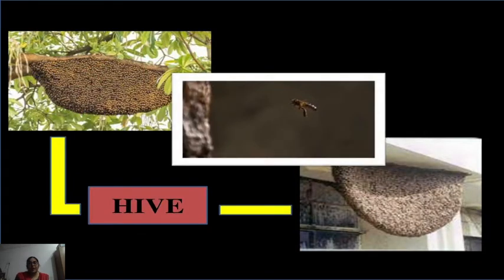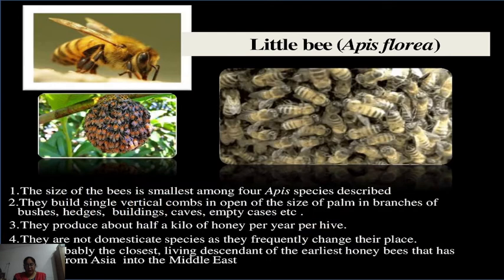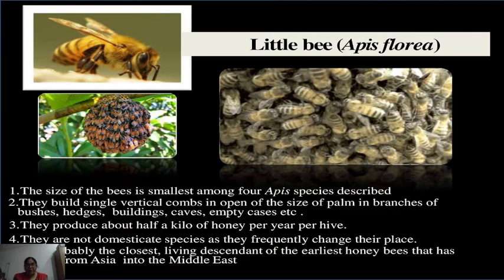This shows the huge hives of the rock bees on tree branches and on walls. The next is Apis florea, commonly called the little bee — a miniature of the rock bee. It is a plains species and rarely occurs above 1,000 feet above sea level. There are two species of Apis florea: Apis florea, called the red dwarf honey bee, and Apis andreniformis, called the black dwarf honey bee. It is found in southern and south-eastern Asia and is the smallest among all four Apis species described.